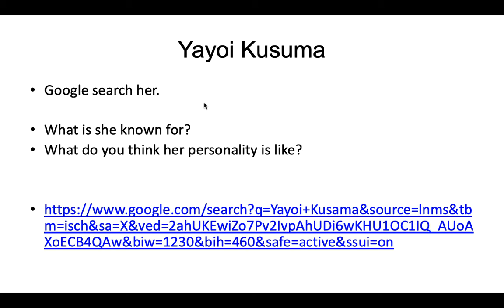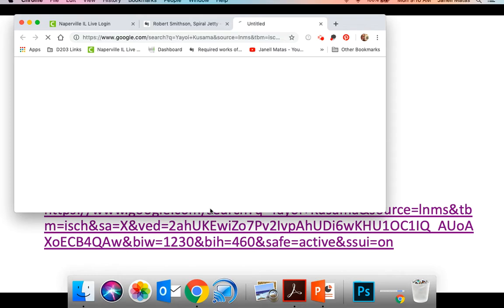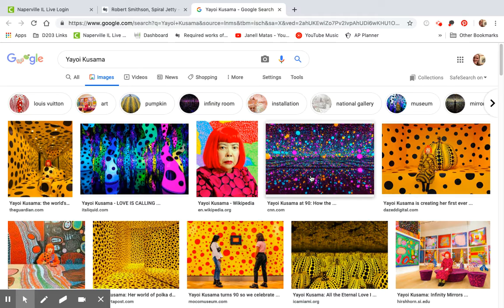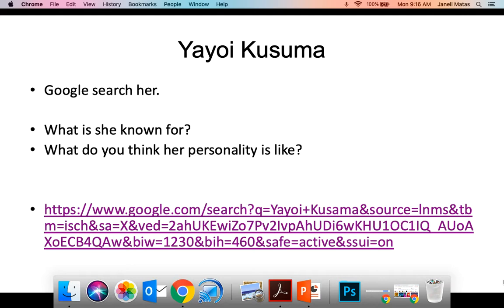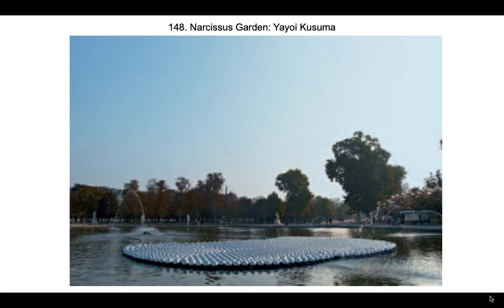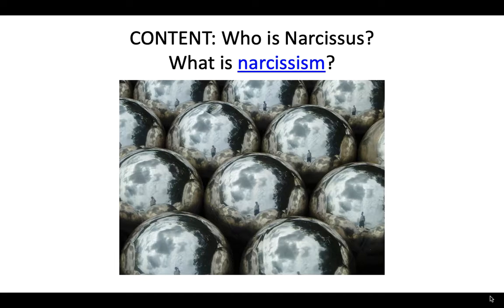We're going to look at Yayoi Kusama — go ahead and Google her name. She's become really popular in the last few years, known for her dots and her interesting story. The image that's in the 250 is Narcissus' Garden. Let's break this down: who is Narcissus and what is Narcissus' Garden?